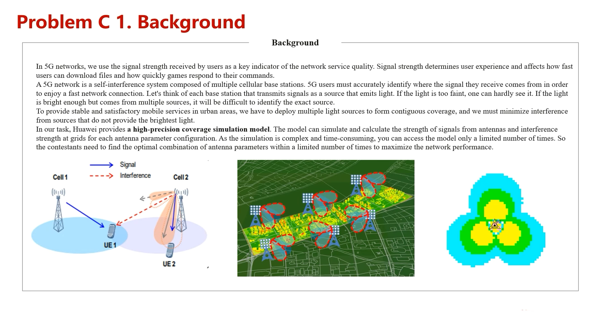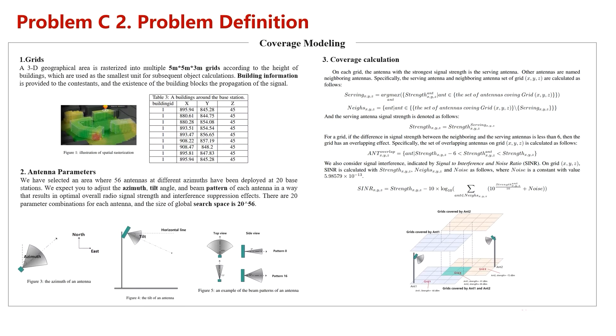Let's go back to the problem. We will provide a high precision coverage simulation model which can simulate the strength of signals at each grid for each antenna parameter. As the simulation is time consuming, you are allowed to access the model only a limited number of times. So please design an algorithm that can find the best antenna parameters which maximize the network performance. Now, let's go to the definition of the problem.